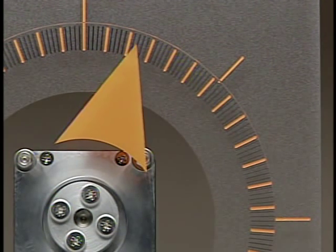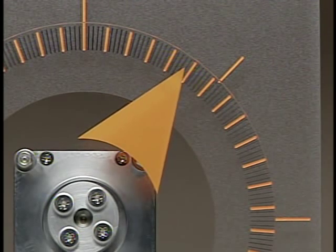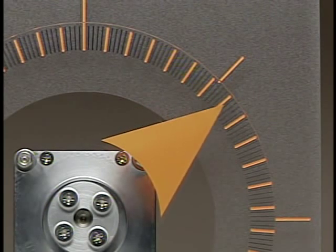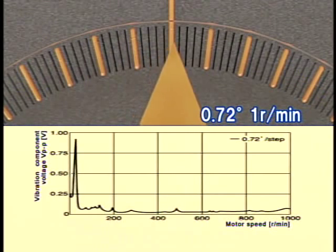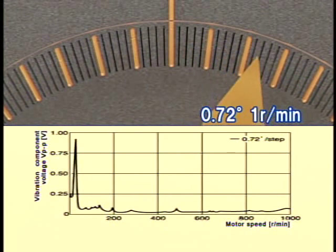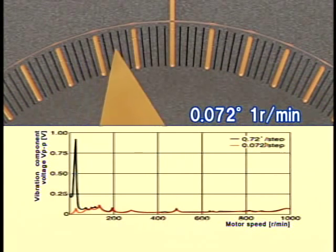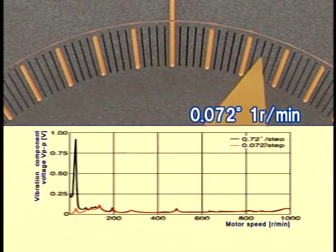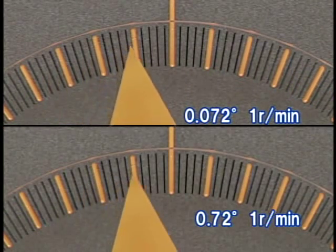As the motor is operated at lower speeds, the vibrations increase, but the microstep drive technique reduces these vibrations. For example, if 0.72 degrees is turned at one revolution per minute for one step, the step vibration is noticeable. But if the step angle was decreased to one tenth of it — 0.072 degrees — the step vibration would not be noticeable, even at the same speed of one revolution per minute. This is the microstep effect.